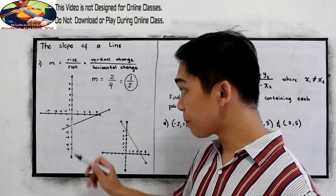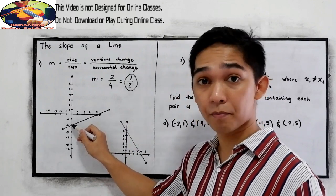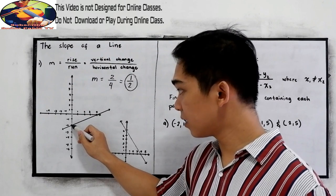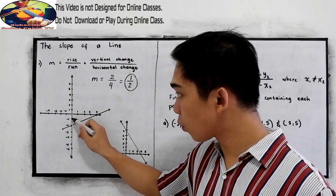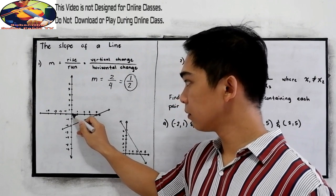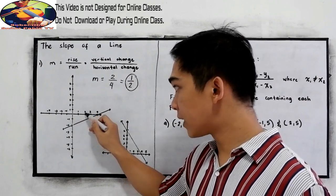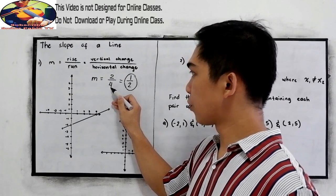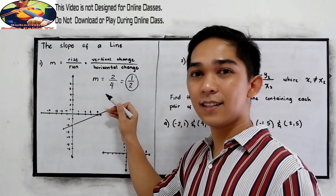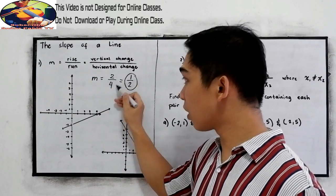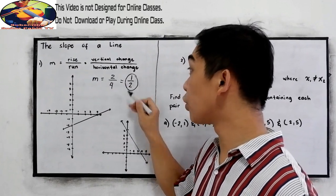Let's check again. First step, locate the y-intercept. It's here. Then rise, we have 2 rise, 1, 2. Then the x-intercept, 1, 2, 3, 4. We have 4 in our denominator. Reduce in lowest term, we have 1 over 2.